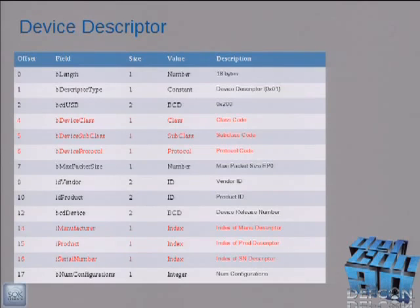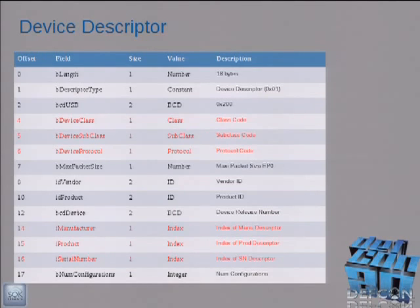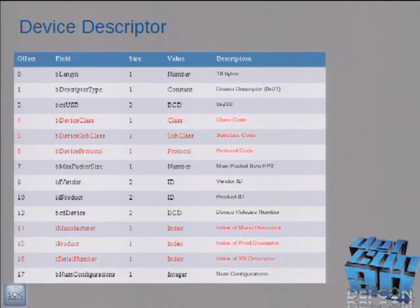The device descriptor sends the length first, then descriptor type 1, the USB BCD version — 0x0200 in hex — and then a couple of important pieces: the class, subclass, and protocol. In the USB spec you can send zeros meaning 'I'm not going to tell you yet — I will tell you in a lower descriptor.' So you might not declare it in the device descriptor — maybe you'll say it in the configuration or interface descriptor. Other fields include packet sizes and then manufacturer ID and product ID. In some cases a serial number has to be filled out.